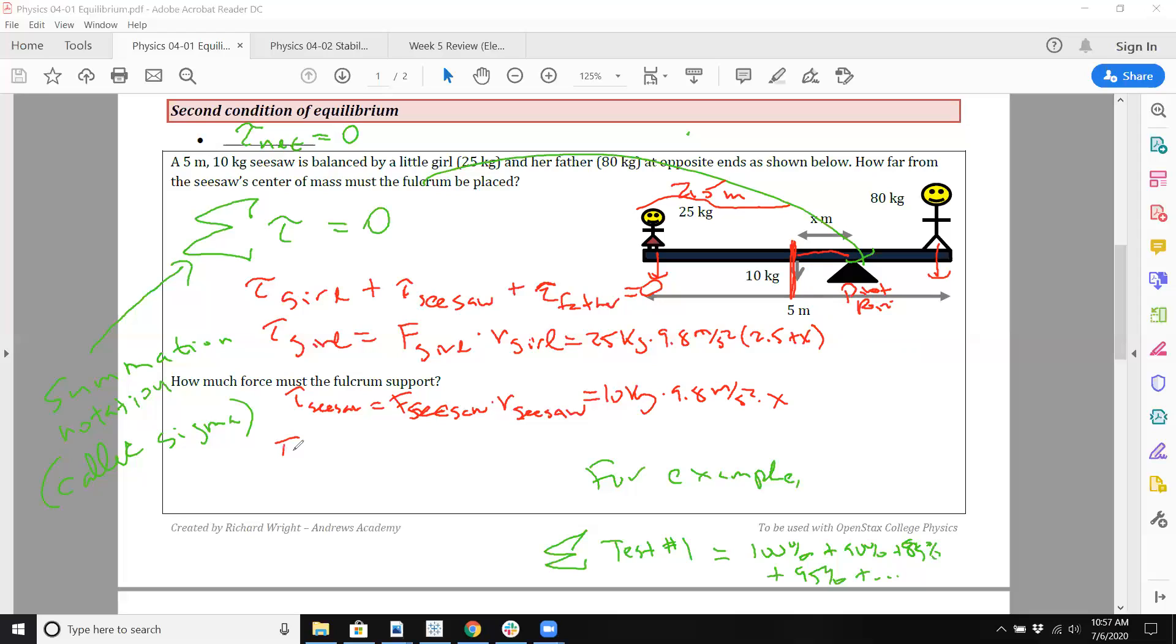And finally, for the dad, torque of the dad is going to be the force of the dad times the radius. Now the one thing that's kind of interesting is that he's on the other side of the fulcrum. So we're actually going to say 2.5 minus x for his radius. And 80 kilograms, this is weight, times 9.8 meters per second squared. Now the part that's going to be a little funky is that you have to put a negative sign next to him.